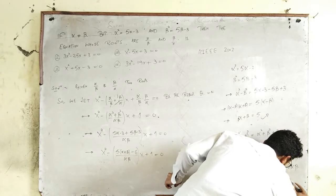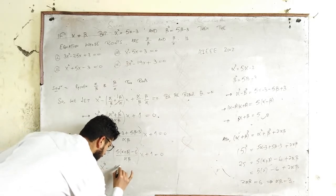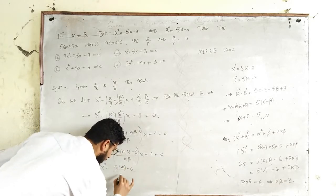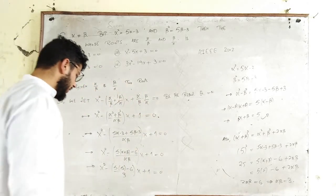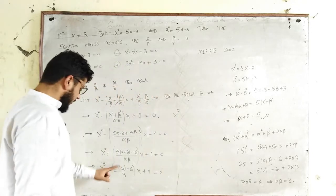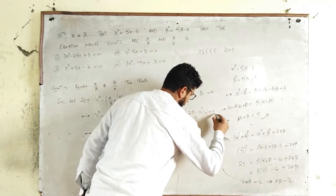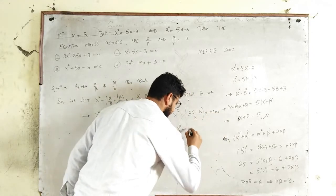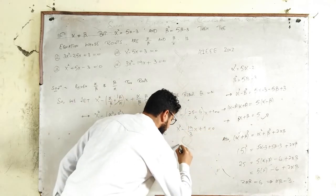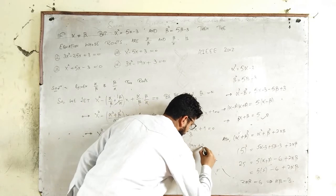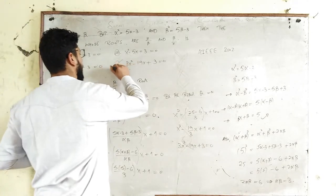Substituting these values: x² minus [5×5 - 6]/3 times x plus 1 = 0, which gives x² minus (19/3)x + 1 = 0. Multiplying through by 3: 3x² - 19x + 3 = 0. So option number four is correct.